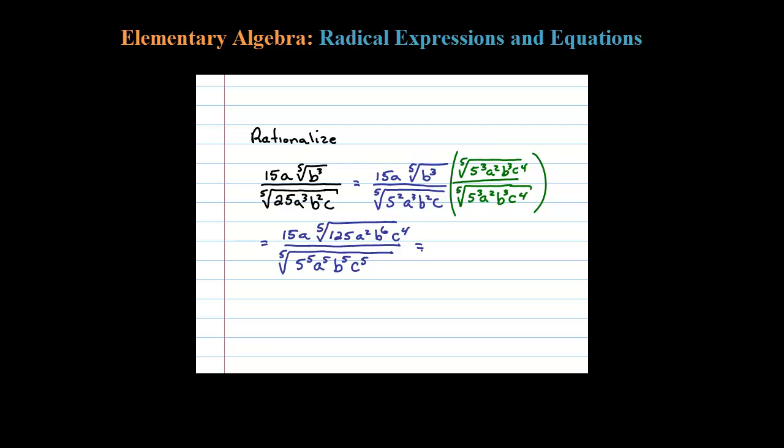So in the denominator, we can simplify this as 5abc. The fifth root of a to the fifth is a, the fifth root of b to the fifth is b, and so on. No more radical in the denominator. But I do notice in the numerator I can simplify a little bit here.